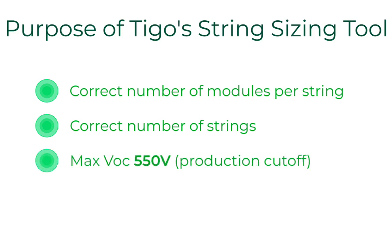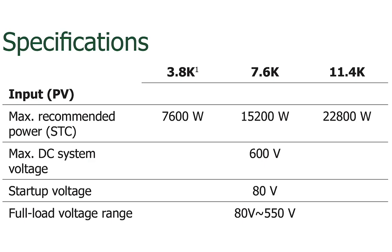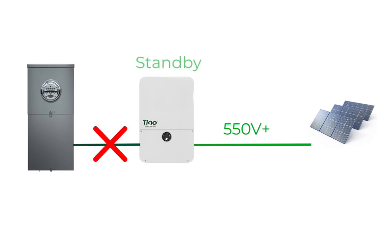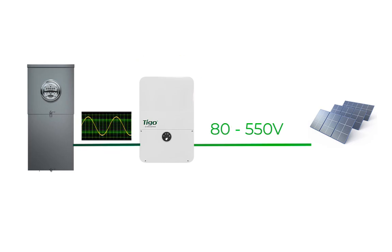The tool also ensures the open circuit voltage does not exceed 550 volts. Although the Tygo EI inverters can be used in 600-volt residential systems, there is a safety window of 50 volts on the upper end. Once in operation, if the inverter detects a string voltage of 550 volts, the inverter will stop producing. It will stay in a standby state until the open circuit voltage is below 550, and then it will resume normal operation.